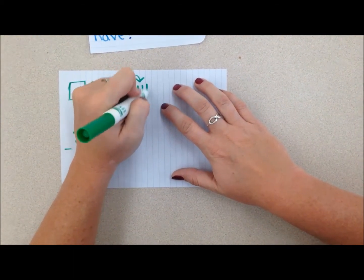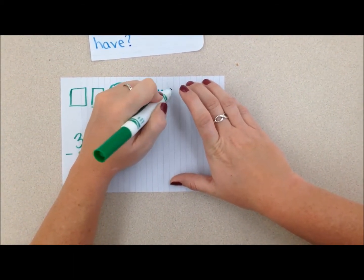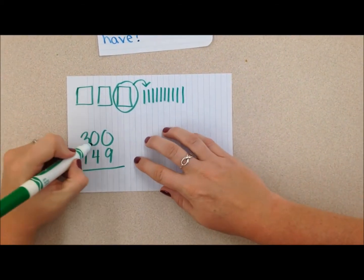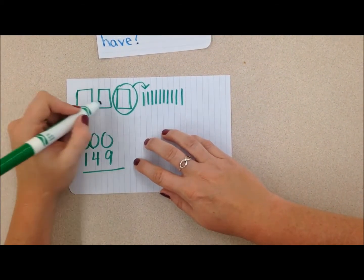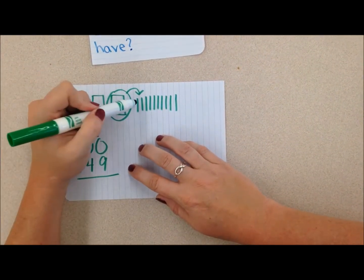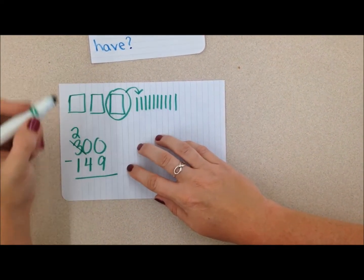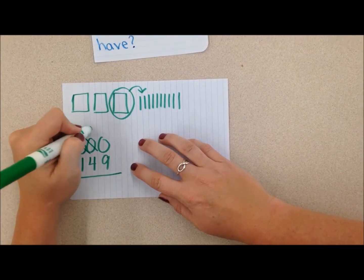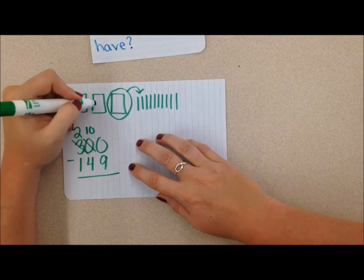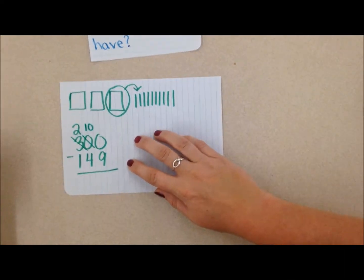I'll count out 10 tens: 1, 2, 3, 4, 5, 6, 7, 8, 9, 10. So right now, I don't have 300s left — I have 200s flats, and I have 10 tens rods. Now, I still have the same value of 300, because 200 plus 10 tens make another 100. That's 300.